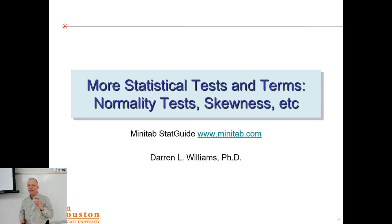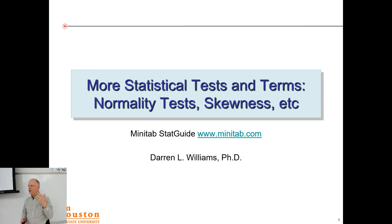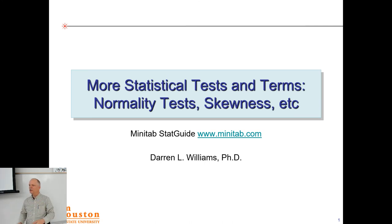Today we're going to talk about terms we see in the graphical summary of statistics — skewness and kurtosis in particular — and also the Anderson-Darling normality test. If it's a Gaussian distribution, you'd have a high probability for being normally distributed.